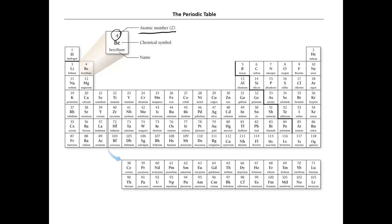We covered earlier in the lecture that the nucleus has neutrons and protons, and protons are the positively charged particles. It's also the proton that gives an element its character. So an element that has four protons has atomic number 4, and it will always be beryllium, no matter what the number of neutrons is. So that's atomic number.